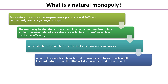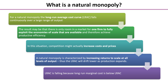A natural monopoly is characterised by increasing returns to scale at all levels of output, so we see the long-run average cost curve drifting lower as production expands. It's falling because the long-run marginal cost curve is below the long-run average cost curve, pulling it down.